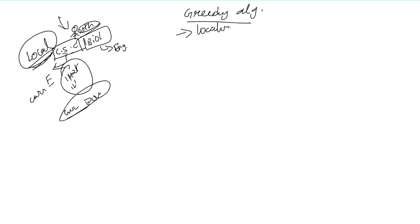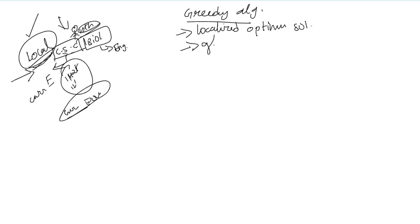If you have a motto, it is a localized optimum solution. The solution is a localized optimum — at that time, the solution is an optimal solution. But this is a final global solution.